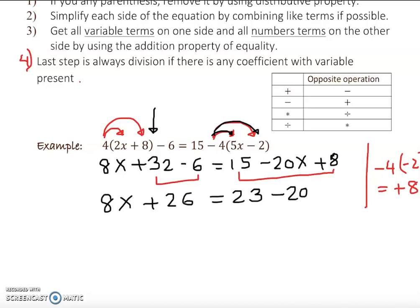Then we cannot combine any further. Then we have to get the variable on one side and numbers on another side by using the opposite operation, which is basically number 3 as you see down there on the bullet. So usually I try to cancel out the smaller variable. Clearly my smaller variable is this one, as you see, because 8x is bigger than negative 20x. So what is the advantage of canceling out smaller variable? You won't see a negative sign at the end.